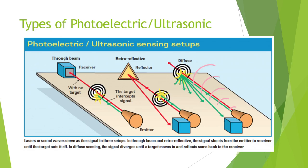Here we have three different types of sensors. The through-beam option on the far left has a light source on one side shooting basically a laser across to a receiver on the other. Is the output of this receiver normally open — outputting 0 volts — or normally closed — outputting 24 volts? Normally, when there's no object, that light shines straight through and hits the receiver, so it's saying 24 volts. Once an object breaks the beam, it goes to no voltage.